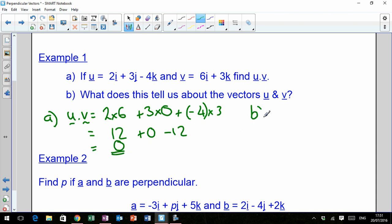For part B, what does this tell us about the vectors U and V? You've guessed that. U dot V is equal to 0, therefore U is perpendicular to V. That's proper mathematician writing there. So that's what we have to recognize. If we get a dot product that is equal to 0, we have to know straight away that means these two vectors are perpendicular to each other.